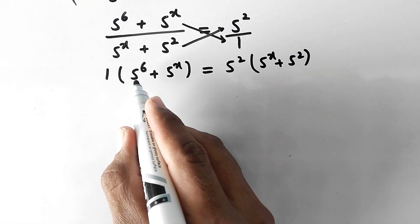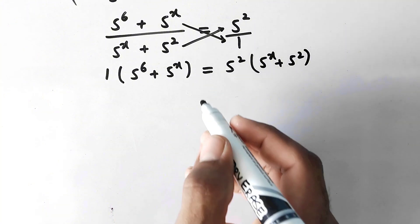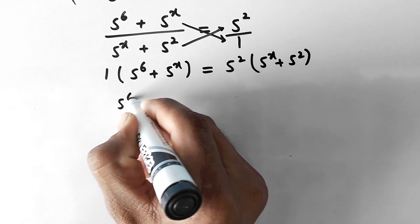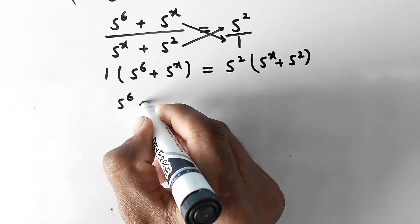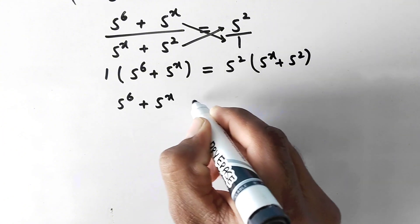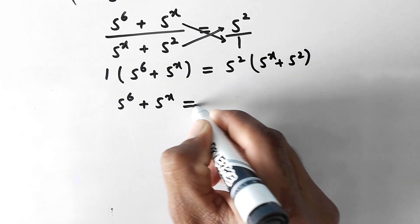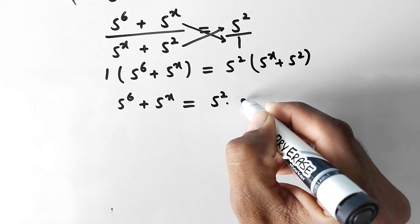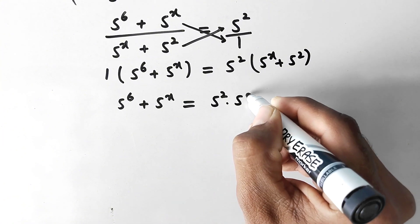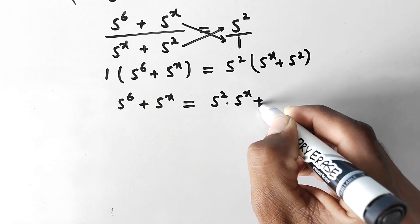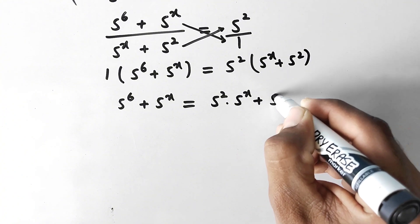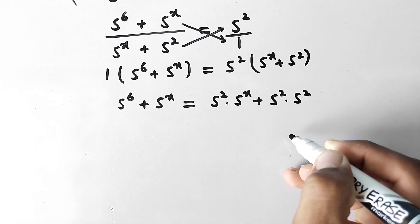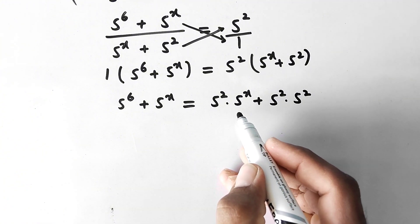By multiplying these values, we get 5 to power 6 plus 5 to power x is equal to 5 square times 5 to power x plus 5 square times 5 square.